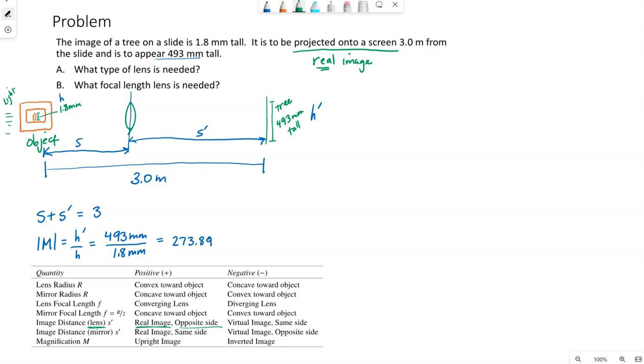But keep in mind, magnification can be positive or negative. So coming to this table we have from the test notes, magnification is positive if our image is upright, it's negative if it's inverted. But we know we must have a real image, because this image is projected onto a screen. Only real images can be projected onto screens.